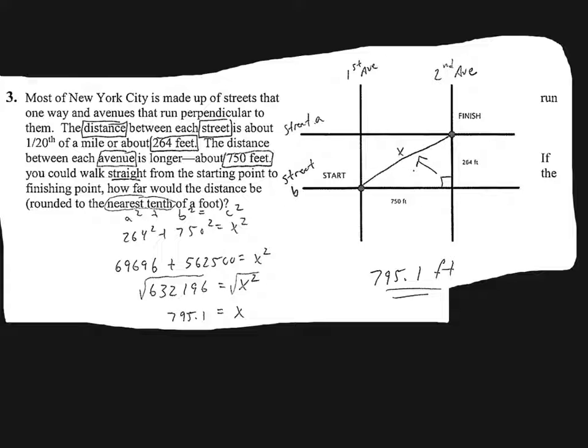How far would the distance be to the nearest tenth of a foot? So again, I drew my box right here, arrow to the hypotenuse. Looks like we're looking for the hypotenuse. So my hypotenuse is x squared. So I have 264 squared plus 750 squared equals x squared. After squaring my values, I get these big numbers right here, still equal to x squared. When I combine them, I get 632,196. Take the square root of both sides. And after I take the square root of x squared, I get x. And after I take the square root of 632,196, I get approximately 795.1. That is rounded correctly to the nearest tenth of a foot. And so my final answer is 795 and one tenth of a foot.